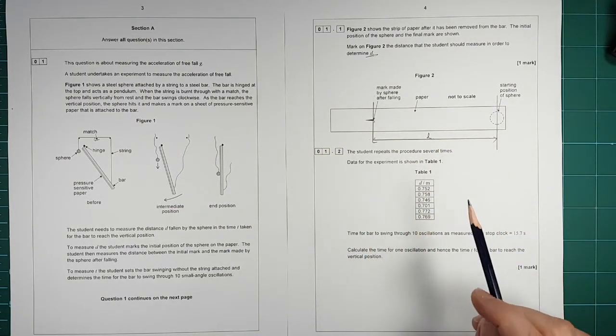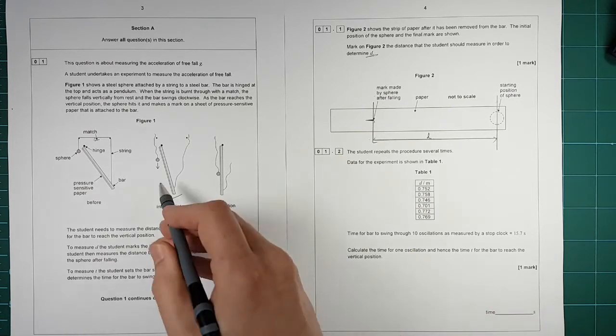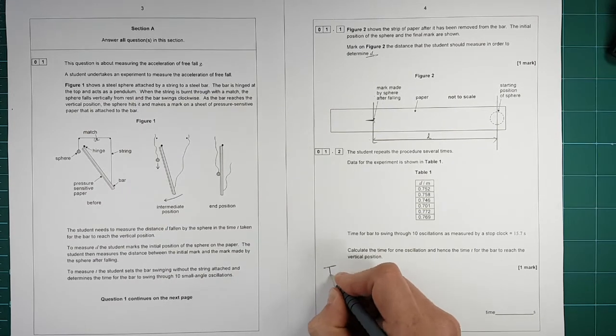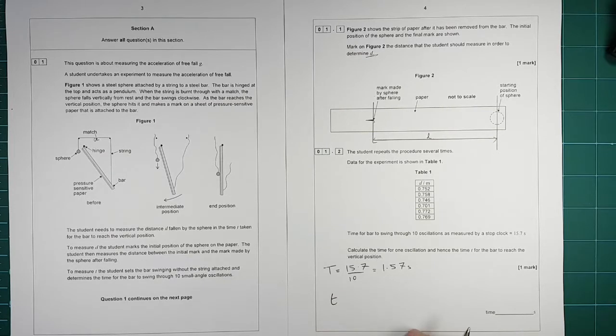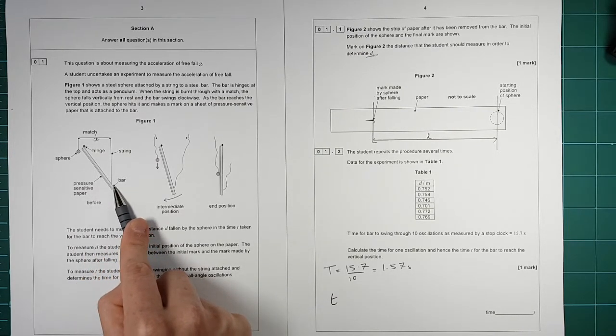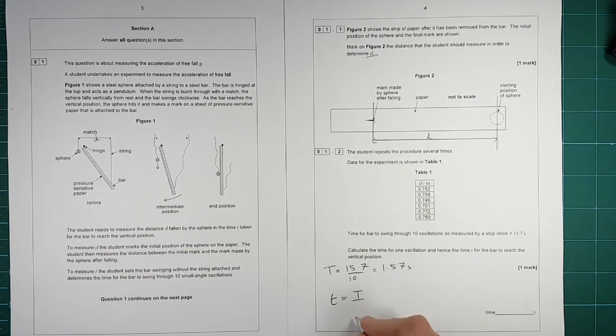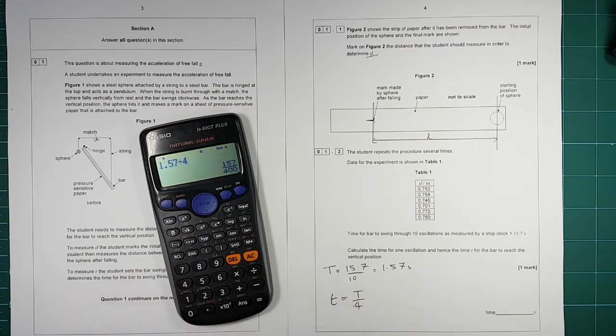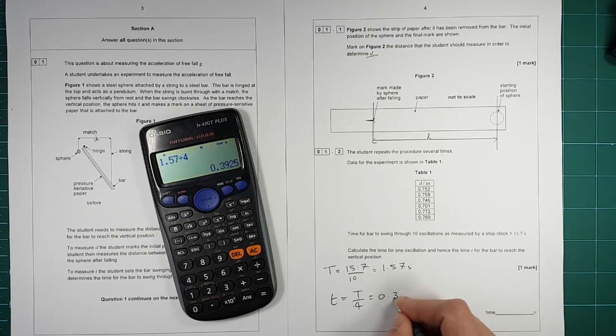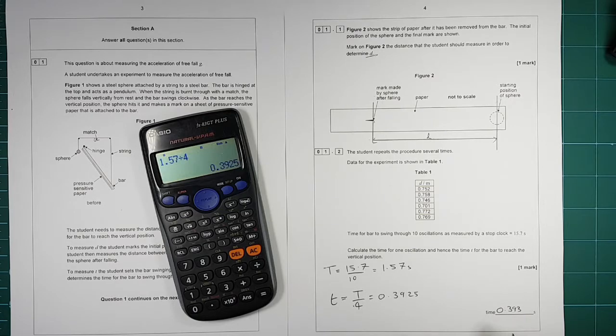The student repeats the procedure several times. The time for the bar to swing through 10 oscillations is that. So what is the time for one oscillation and what's the time for it to reach the vertical position and hit the ball? The time for one oscillation is 15.7 divided by 10, so that's 1.57 seconds. So T, how far does it have to go? One oscillation is all the way to there and all the way back again. So we're interested in it going just one quarter of the way. So T is equal to the time period divided by four. So 1.57 divided by four gives us 0.3925. So we need this to 3 sig fig, 0.393 seconds.